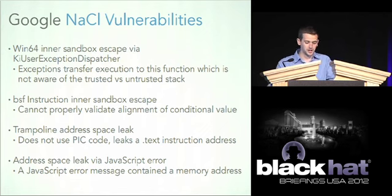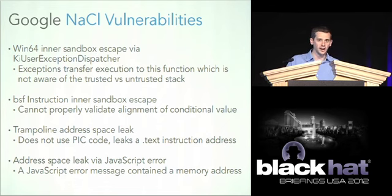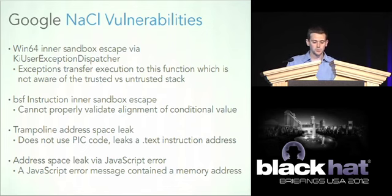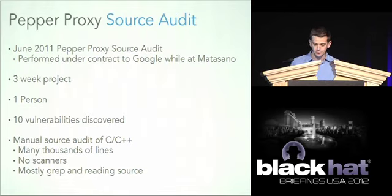Google themselves have found some cool vulnerabilities and published them. On Win64, when an exception occurred, the user exception dispatcher function would get triggered in NTDLL — but NTDLL wasn't aware of the untrusted stack and untrusted address space, so it would end up trashing trusted memory whenever an exception was triggered. There were also minor issues like a trampoline address space leak, where a Nexi module could read the untrusted trampoline code in memory and extract a trusted address revealing trusted address space layout, and address space leaks via JavaScript.